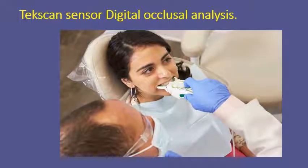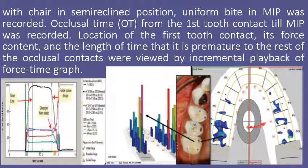The T-scan is a modern digital occlusal analysis device. The patient is seated in a semi-reclined position and asked to close into MIP (maximum intercuspal position). The device produces data via software including: first tooth contact, bite force, and the length of time from premature contact to maximum intercuspal position. It produces a 2D picture and a 3D picture with multiple colors representing bite force — taller columns indicate higher biting force — and a time measurement from the first premature contact to the final contact.